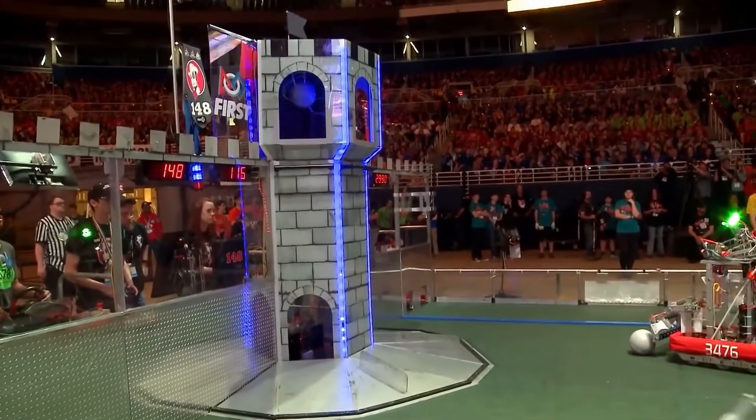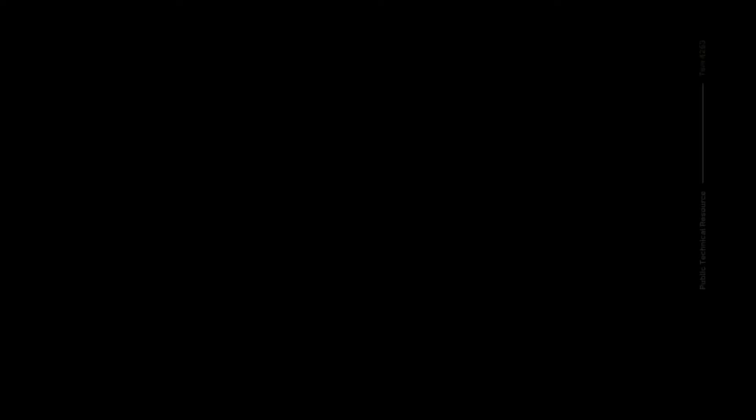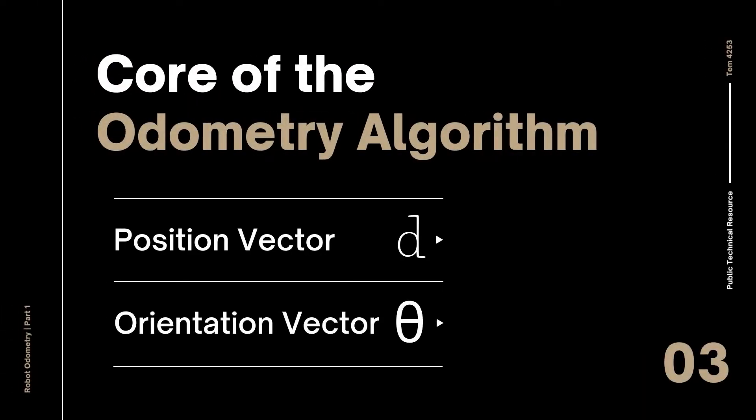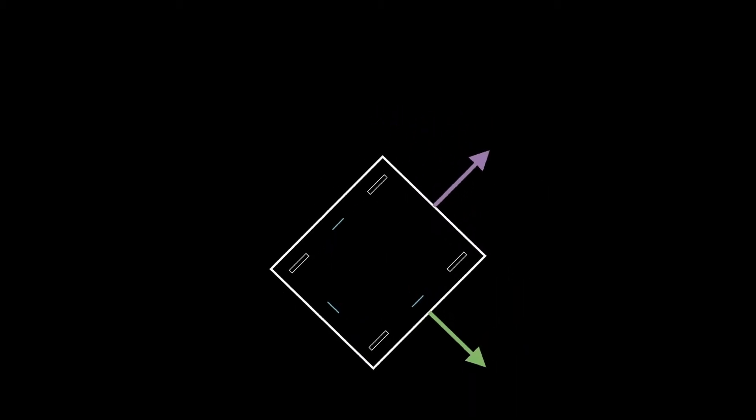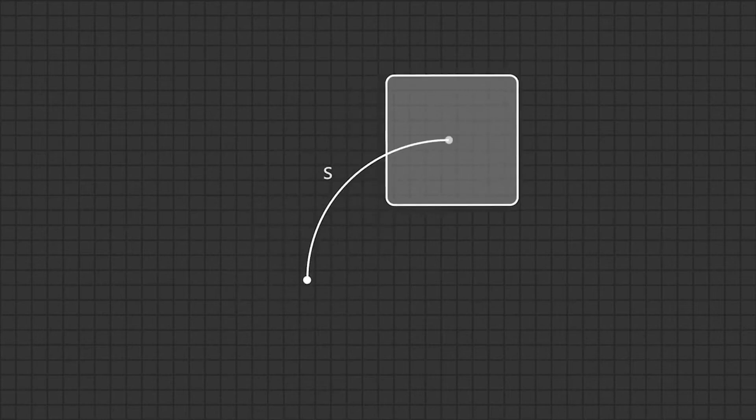Alright, we have a lot to cover, so let's dive straight into it. The core of the odometry tracking algorithm is to use our tracking wheels to provide the robot with live data on two vectors: the position vector d and orientation vector theta. The position vector tells the robot where exactly it is on the field, and the orientation refers to where the robot is facing relative to the field. To find these two vectors, we want to model the robot's motion as an arc. But what does this mean, and how does the math work out?